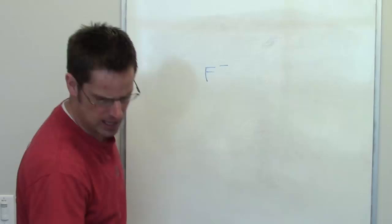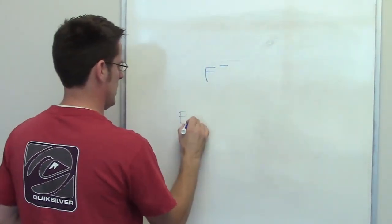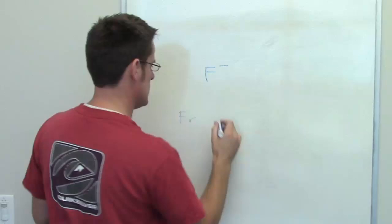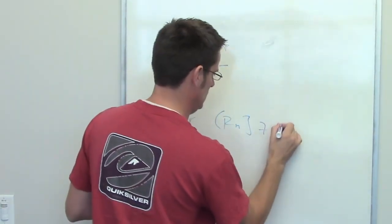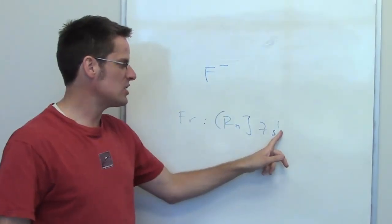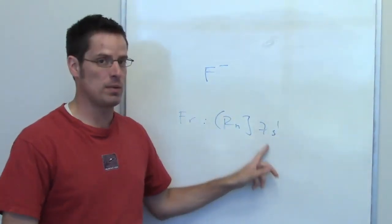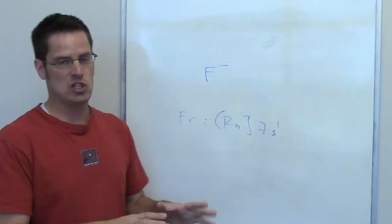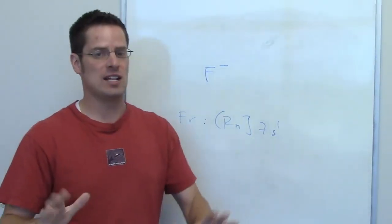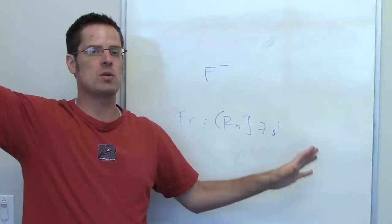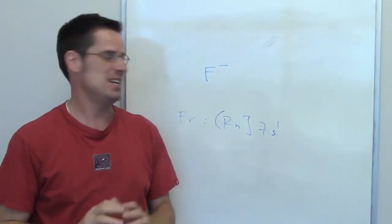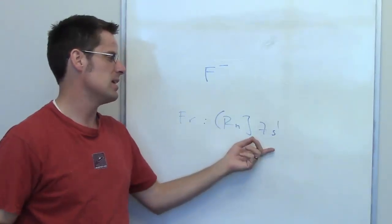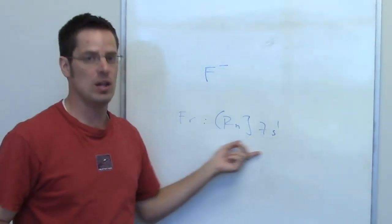So francium, if you look at it, has an electron configuration of radon, followed by 7s1. The point is, this single electron is in a 7s orbital. Compared to a 1s or a 2s, a 7s is humongous. It's so far away, this electron from the protons in the nucleus, that you can shave it off or take it away and it won't even feel it.